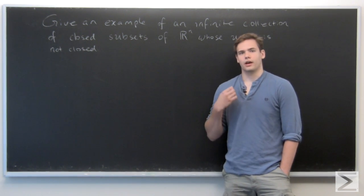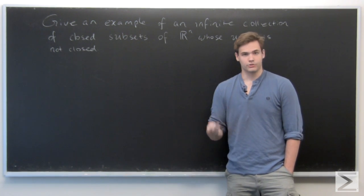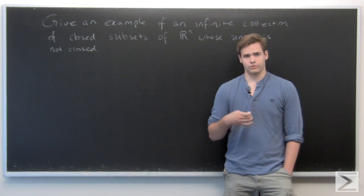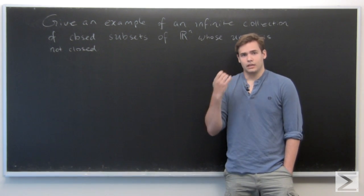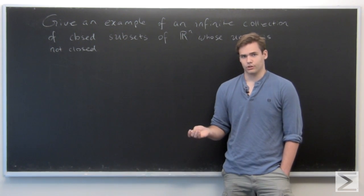So we've seen in this section how we can talk about infinite unions and intersections of closed and open sets in R^n. And for example, we proved that infinite unions of open sets are open and infinite intersections of closed sets are closed.